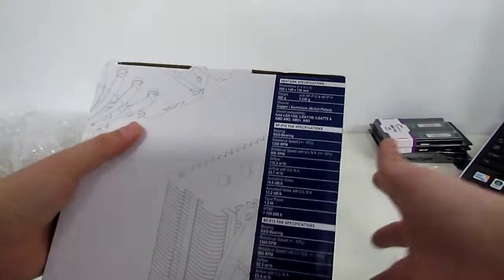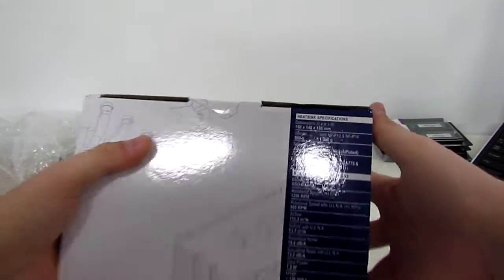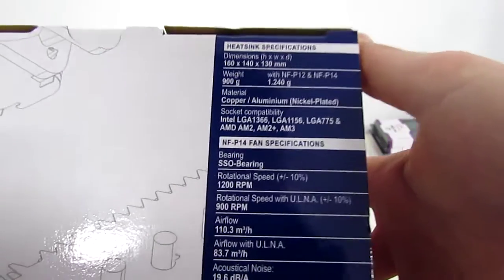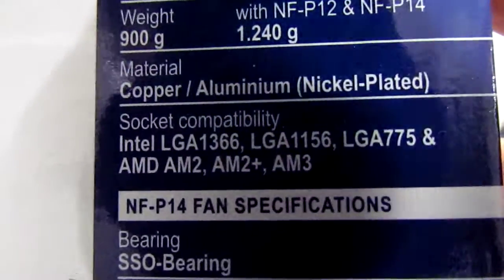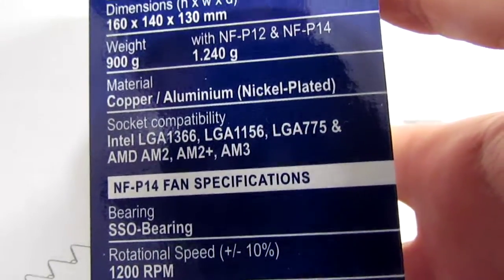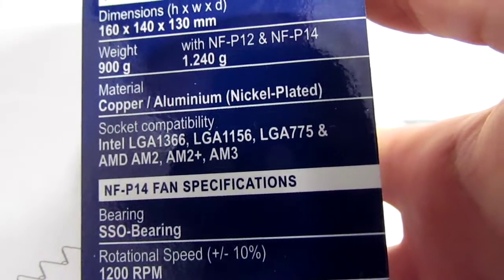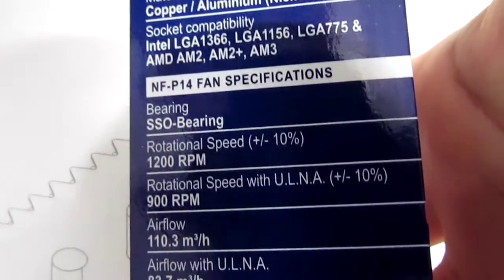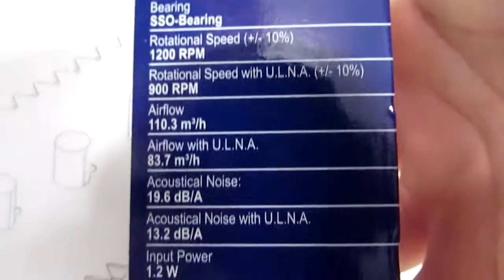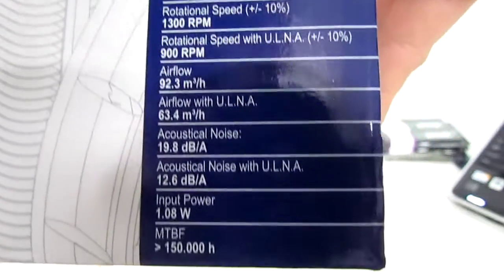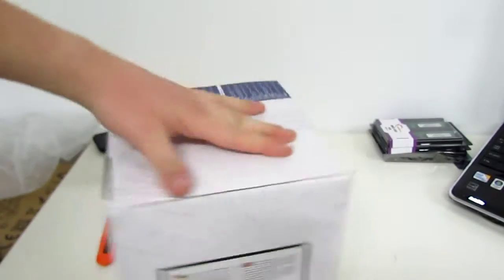What's on the top? We have some specifications, that's always good. Heat sink dimensions, we've got the weight at 900 grams. I doubt that. We can see the socket compatibility there. 1366 for first generation i7s, 1156 for i5s and i7s, LGA 775, AM2, AM2+, and AM3 sockets. We can see fan speeds, airflow, noise level, expected life. That's pretty much about the fans.